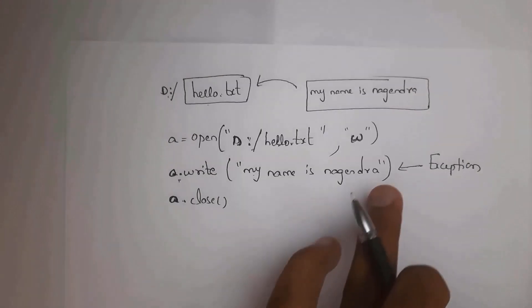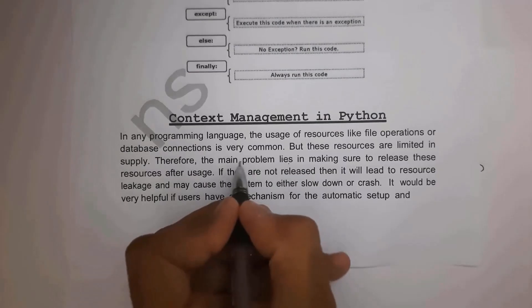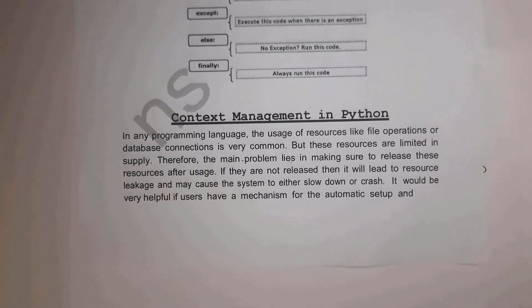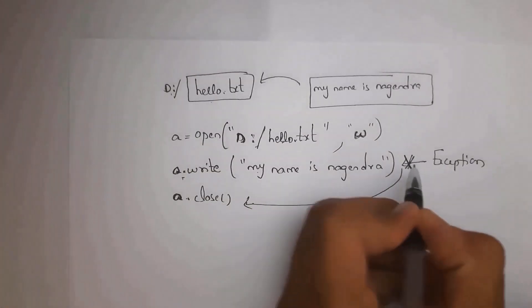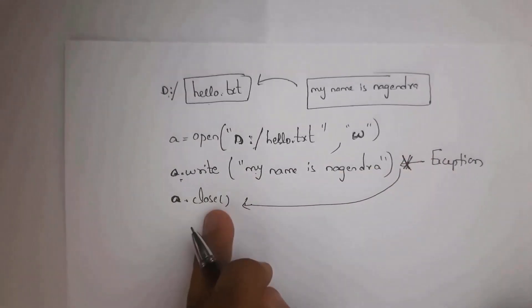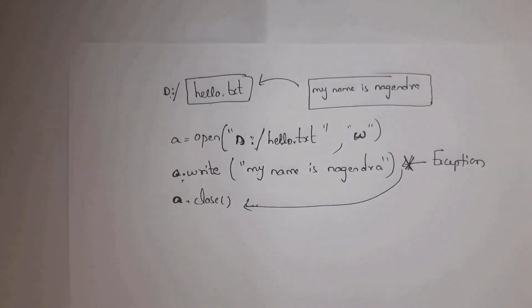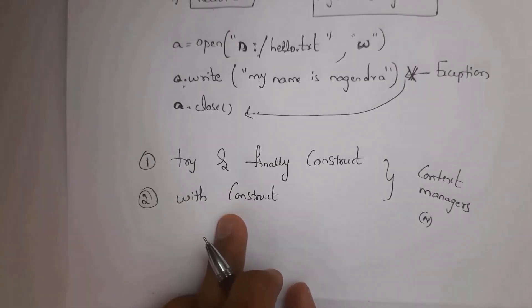For example, if an exception occurs while writing, execution stops and the file will not be closed. The main problem is making sure to release resources after usage — if you don't, your system may slow down or crash. To overcome this problem, use context managers. Context managers are divided into two types: the try/finally construct and the with construct. Both are used for resource management.